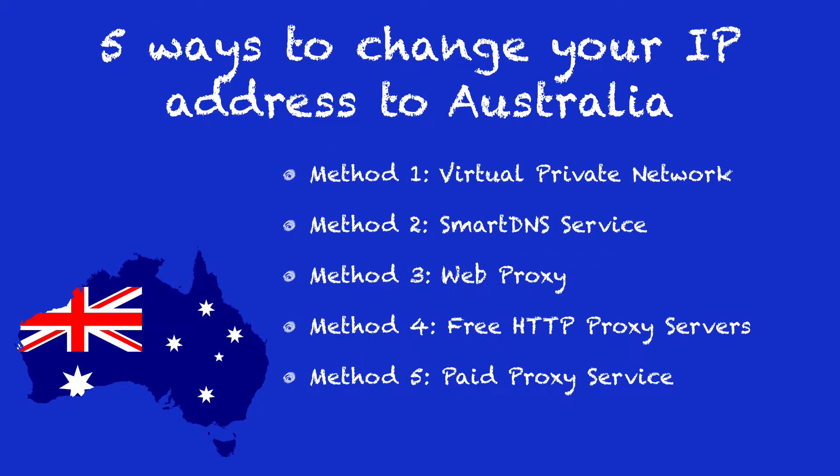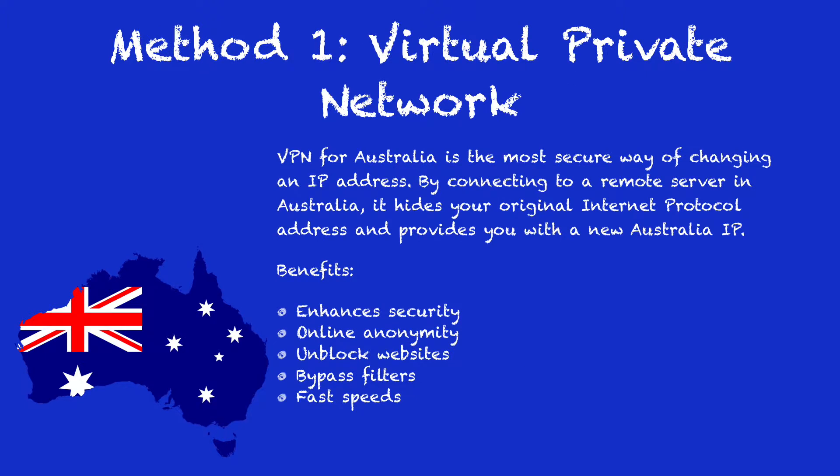There are 5 simple ways to change your IP address. Method 1: Virtual Private Network. It is the simplest and most secure way of changing your IP address. Some of the benefits include enhanced security, online privacy, unblocking sites, and bypassing filters.